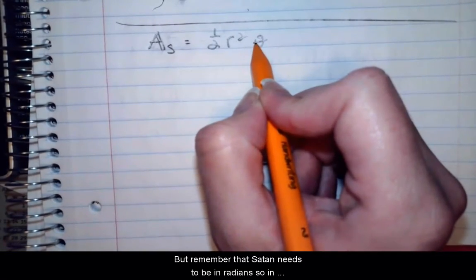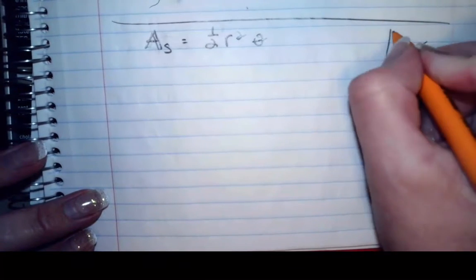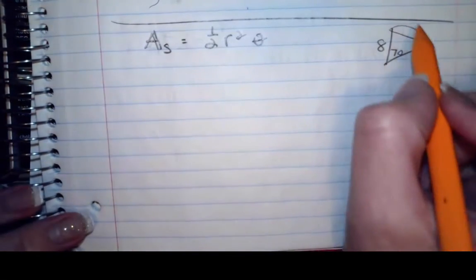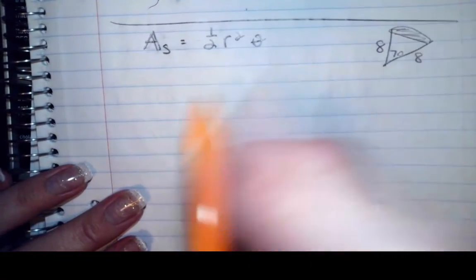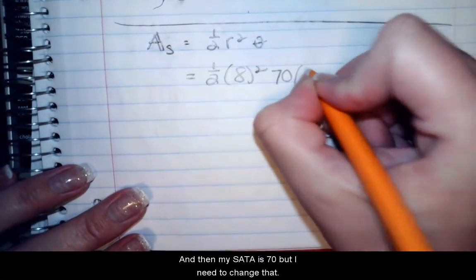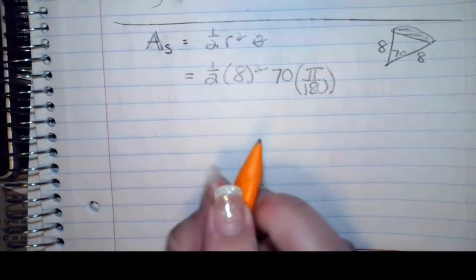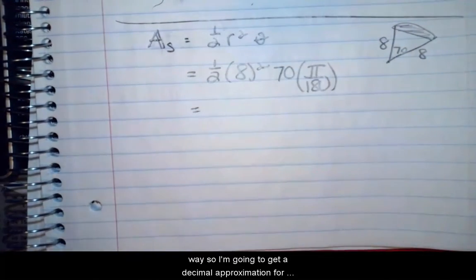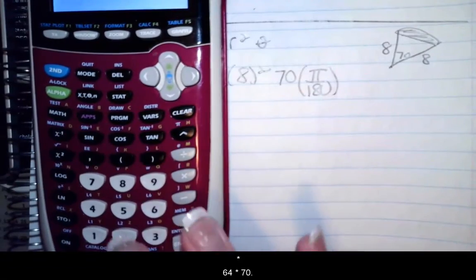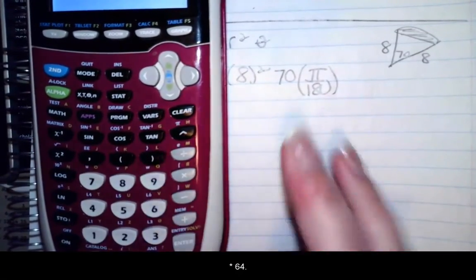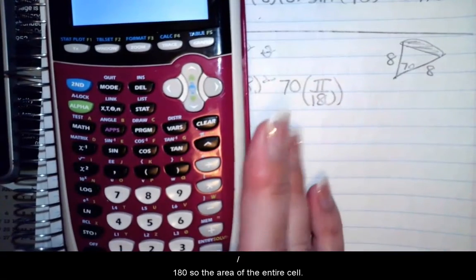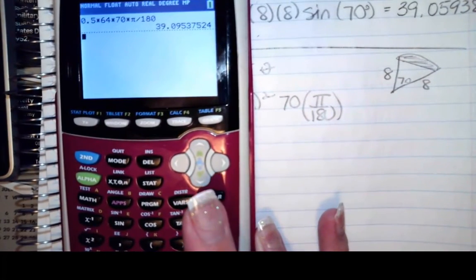Remember that theta needs to be in radians. In this case, looking at my picture, my radius is 8 and my included angle is 70 degrees, and I want this portion. So I have one-half r squared, and theta is 70, but I need to change that into radians along the way. So I have one-half times 64 times 70 times pi divided by 180, and the area of the entire sector is going to be 39.0954.